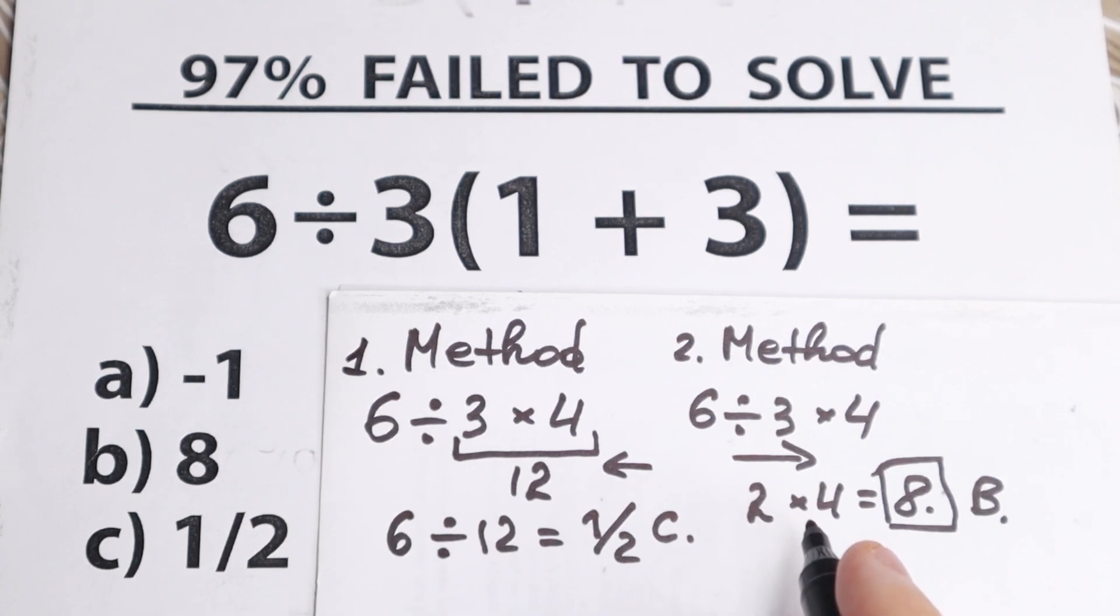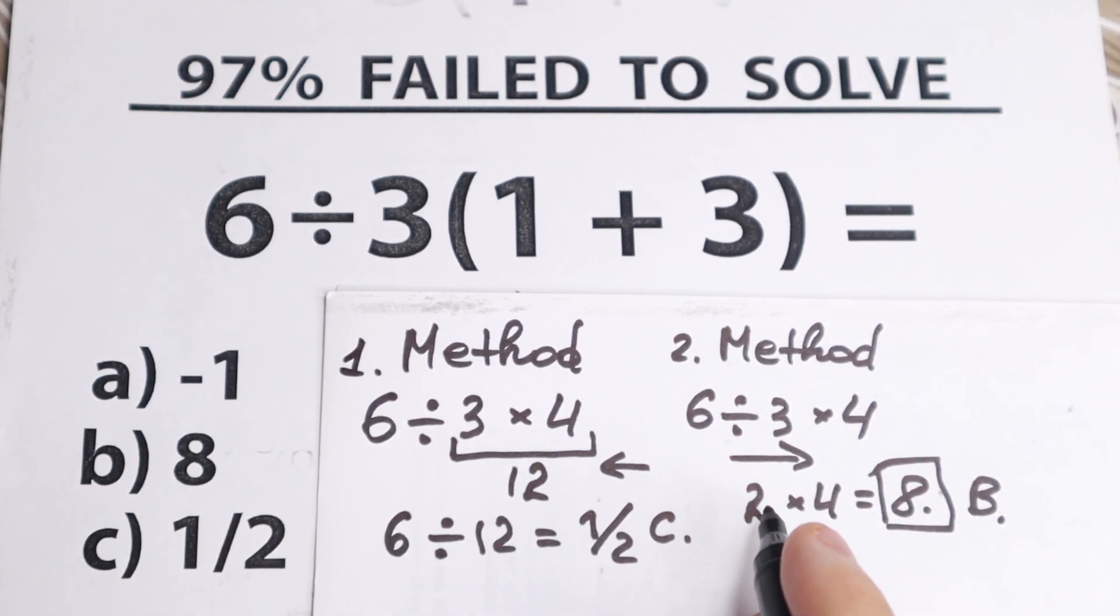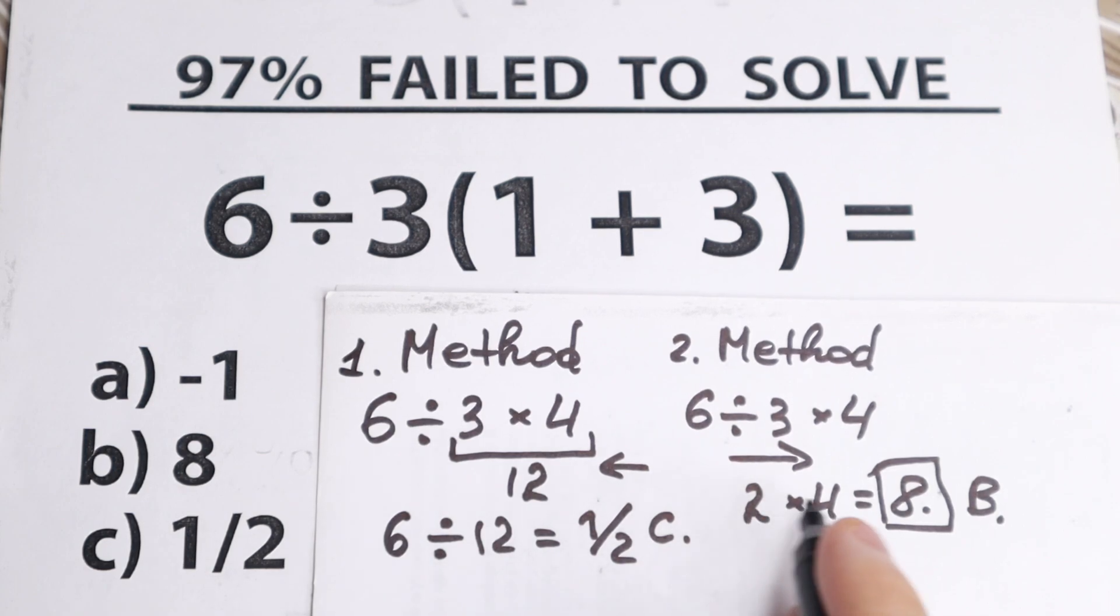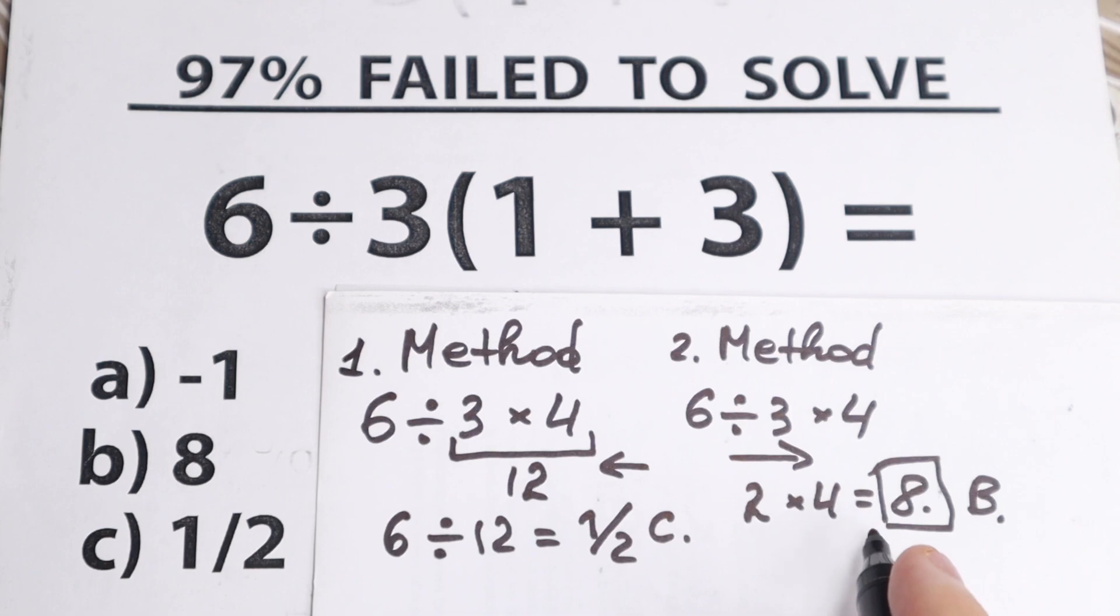Of course, if we don't have addition and subtraction, we don't have addition and subtraction. We go from left to right. And we have this answer. 2 times 4 equals 8.